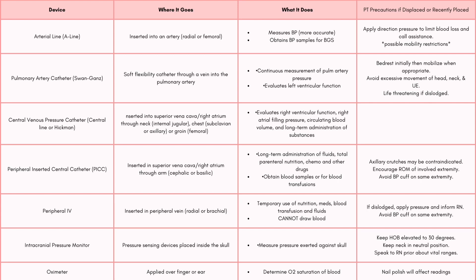Next we have the PICC line. You might not want to use crutches with this patient because it will be in their arm up near the top. Encourage range of motion of that involved extremity because it will be painful and they won't want to move it, but we want to keep the shoulder moving. Avoid blood pressure cuff on that arm. Next we have the peripheral IV: if dislodged, apply pressure and inform the RN. You may also want to avoid blood pressure cuff readings on that arm depending on placement.